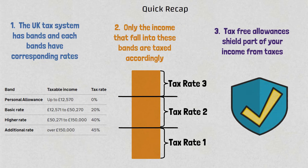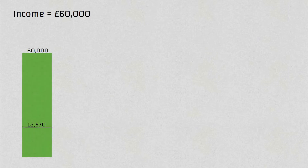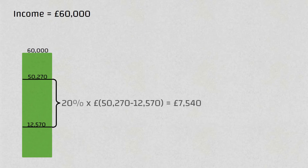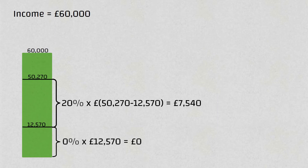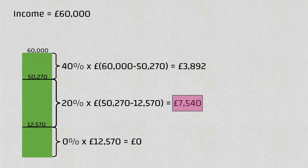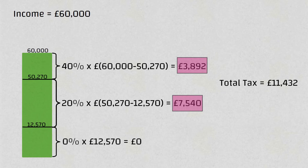Let's work on a couple of examples to make sure you've really understood this. Going back to someone who earns £60,000 a year: the first tax band would be 20% of £50,270 minus the personal allowance of £12,570 — that's the tax free amount — which equates to £7,540 of tax in the first band. In the second band, the amount above the threshold: 40% of £9,730 works out to be £3,892. So in total you would pay £11,432 in tax.